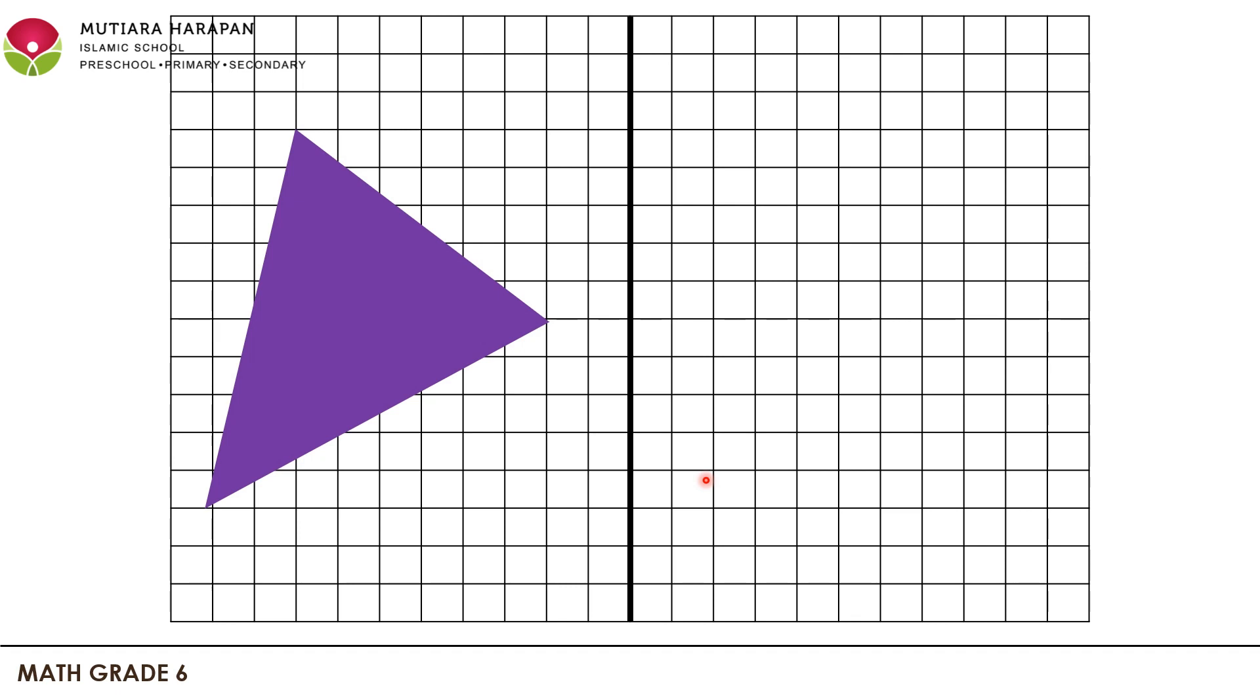Welcome back everyone. This is our main material. We have a square grid with a mirror line and a purple triangle. We know that the triangle has three vertices, so if you want to sketch the reflection, the reflection also has three vertices. But where are the vertices?